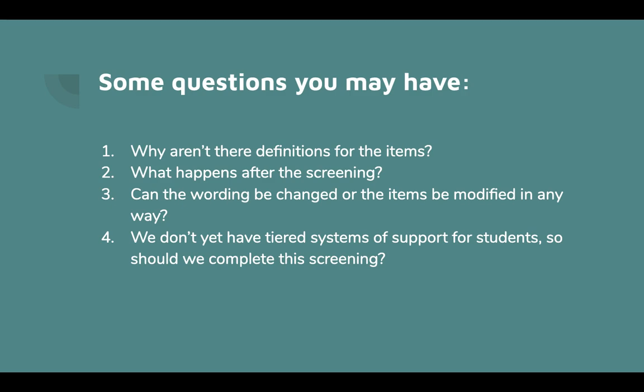Can the wording be changed or the items be modified in any way? Any modification to the SRSS would invalidate the supporting research. The zero-to-three Likert rating scale must also be used. The SRSS must be used exactly as it's provided to you. If your school doesn't yet have tiered systems of support, using the SRSS to collect screening data on all students will help a team know where to best direct their efforts. Most schools will have at least some evidence-based intervention opportunities available. Teams can start by strengthening what they are already doing, and as data show it is needed and capacity develops, additional supports can be layered.